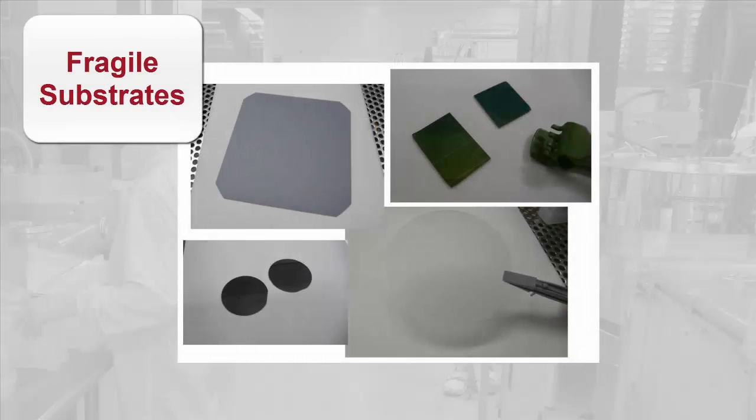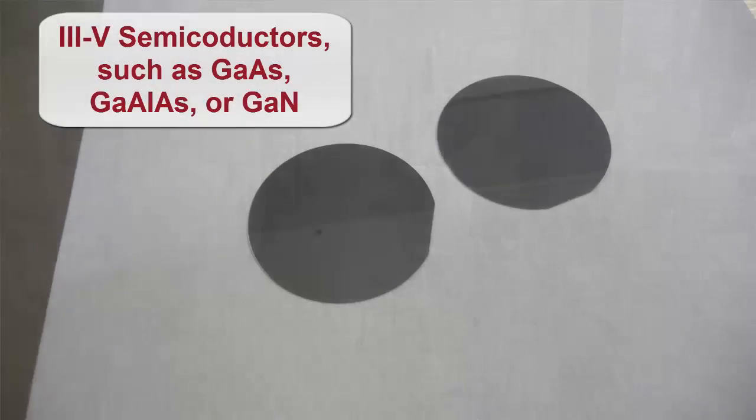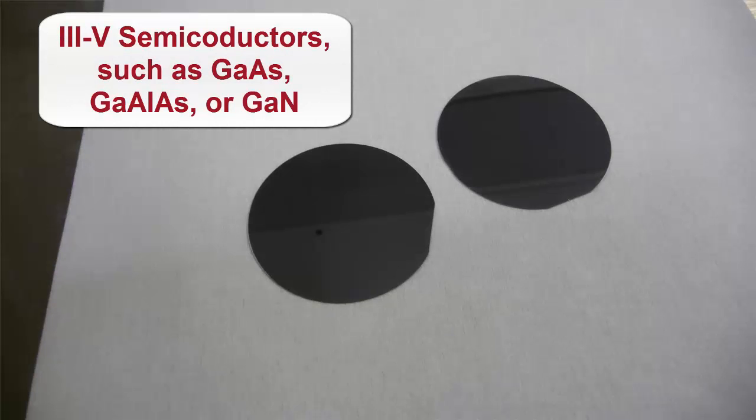There are many substrates that require more delicate handling than standard silicon wafers. These fragile wafers can include 3-5 semiconductors, such as gallium arsenide, gallium aluminum arsenide, or gallium nitride.